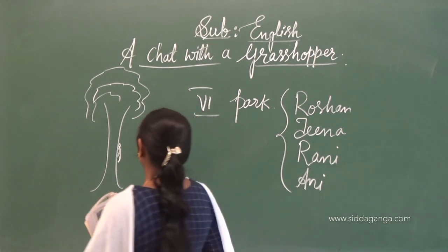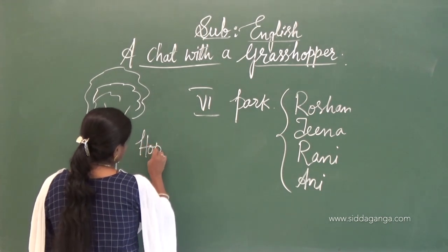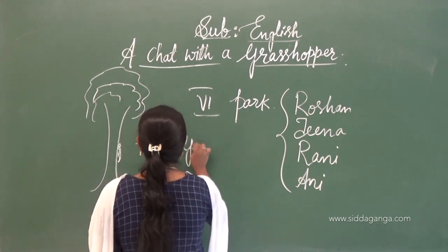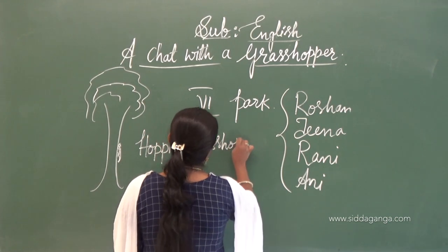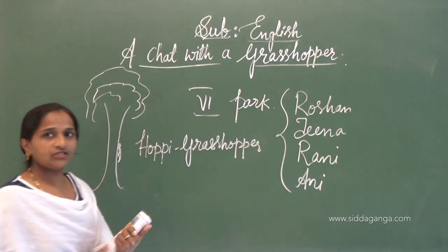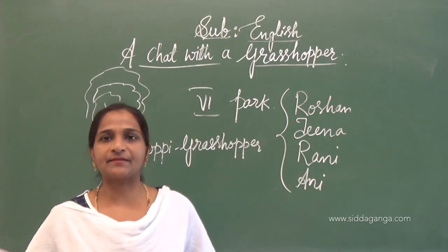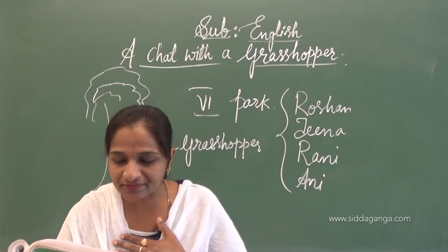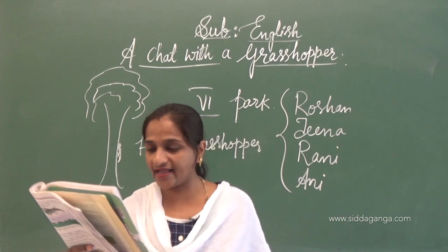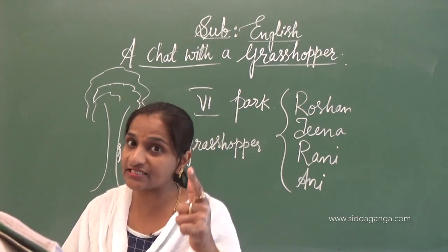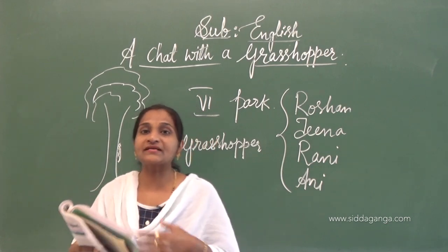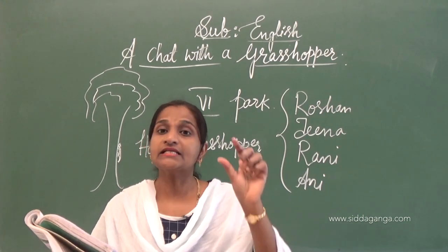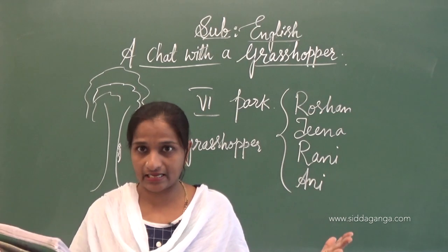Hoppy replies. Who is Hoppy here? Hoppy is the grasshopper. Hoppy is replying: I am a summertime singer. I have several legs and eyes. I am a farmer's friend. Can you guess who I am? I am a summertime singer — summer is a season. In summertime I used to sing more. I have several legs and several eyes. I am a farmer's friend.